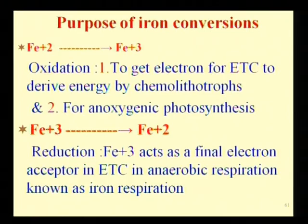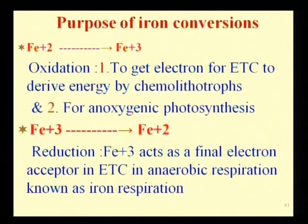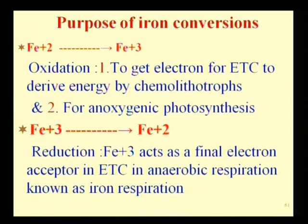Iron gets oxidized because through this oxidation the organism derives electrons to pass into the electron transport chain. This is the speciality of chemolithotrophic organisms — 'litho' meaning they utilize electrons from inorganic sources. The electron is derived from this oxidation, enters the ETC, and the organism generates energy. These are known as iron oxidizers.